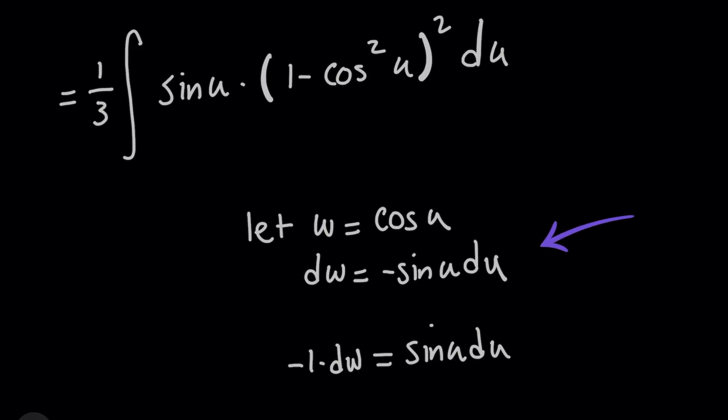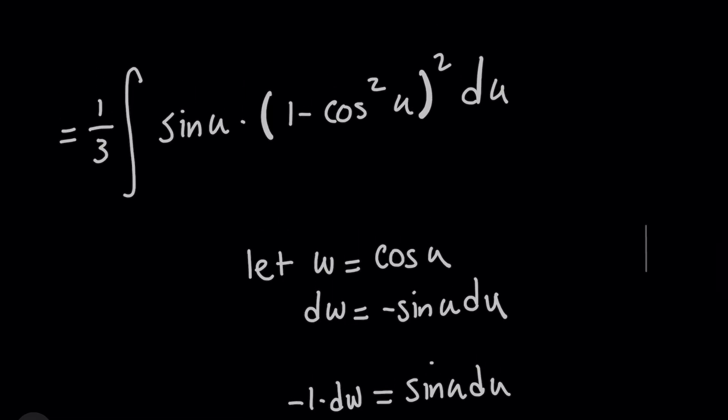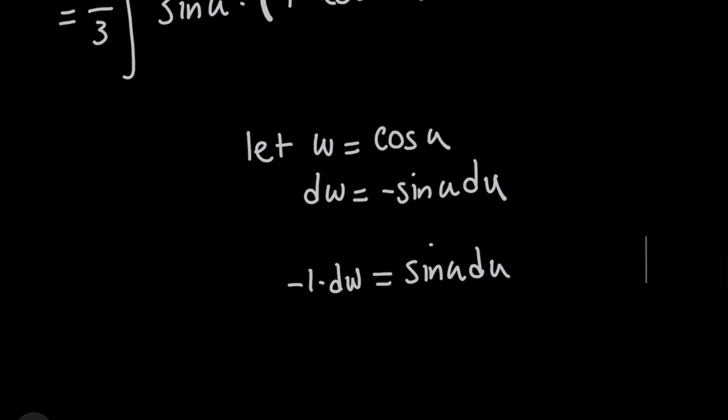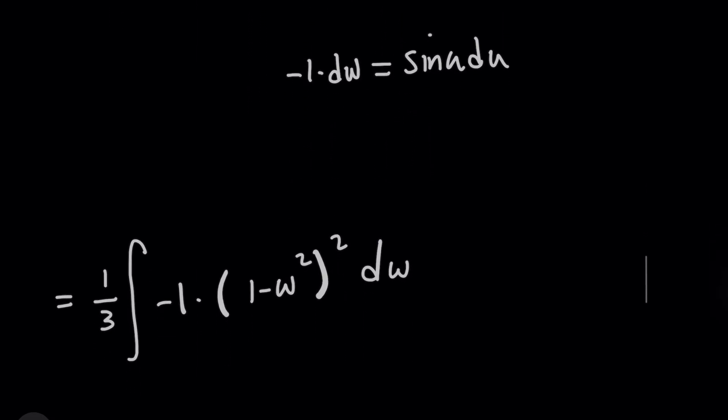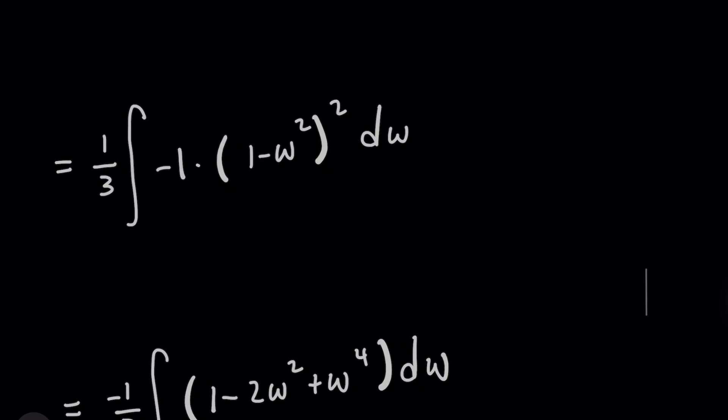Now we do have to modify this equation a little bit because above, we don't have sine of u du with a negative in front. But just like before in the first part of this video, I can multiply both sides by negative one to solve for sine of u du. And that means when we rewrite this expression in terms of w, I've introduced this negative one here. And that's not a problem, because I can just bring that outside of the integral.